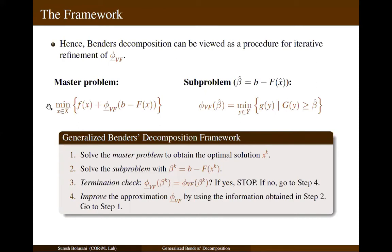At this point, we have this master problem, which is similar to equation 2 but phi_Vf is replaced with phi_underscore_Vf. We have this sub-problem which is an instance of the value function for a fixed right-hand side vector. Overall, in the generalized Benders decomposition framework, we start by solving the master problem to obtain its optimal solution. Then, we solve the sub-problem with a fixed right-hand side vector. Then, we check for the termination condition, which is the strongness of this dual function. If it is strong, then we stop the algorithm. Otherwise, we improve the dual function further by gathering some information from the sub-problem solving in step 2, and we repeat this procedure.